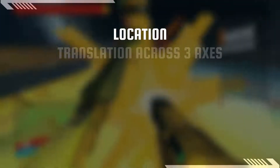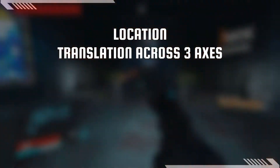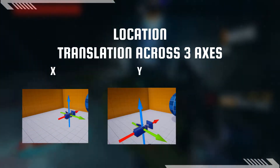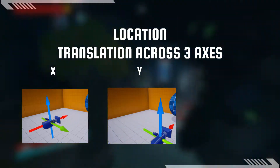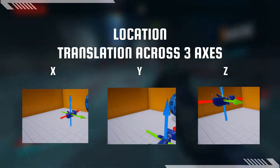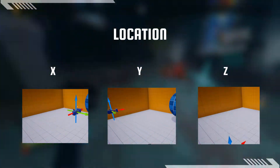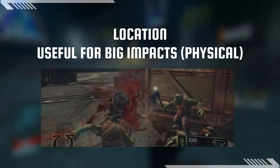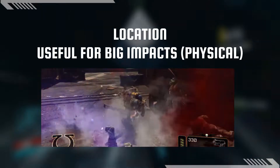Translation can occur on three axes as well: the X, or forwards and backwards; the Y, or side to side; and the Z, or up and down. Translation is well suited to impacts that would physically shift the player, such as landing, recoiling, or being pushed.